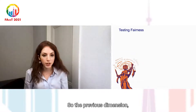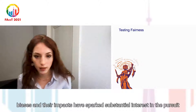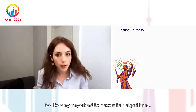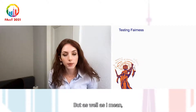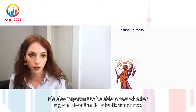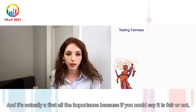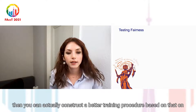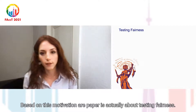The previously mentioned biases and their impacts have sparked substantial interest in the pursuit of algorithmic fairness. It's very important to have fair algorithms, but it is equally important to be able to test whether a given algorithm is actually fair or not. This is of first-order importance because if you can determine whether a classifier is fair, you can construct a better training procedure based on that. Based on this motivation, our paper is about testing fairness.